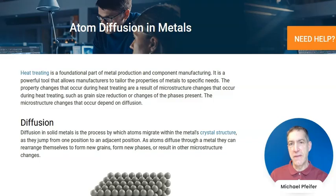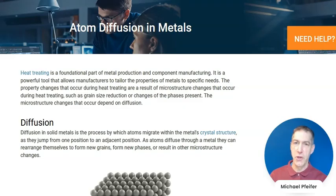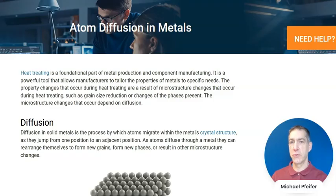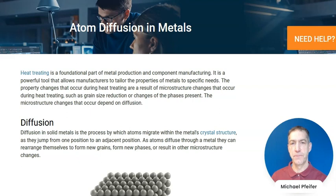By taking advantage of diffusion, by understanding the motion of atoms through a metal — that is diffusion — we're able to control heat treating processes in order to obtain the desired microstructure and the desired properties.